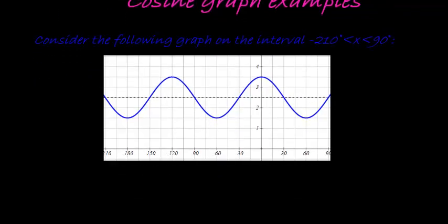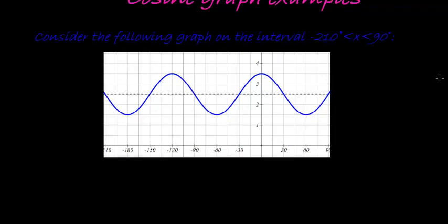Let's go through that again. Where is our center? This graph can have more than one representation. I can, for example, take that as my center and then it's a cosine graph. Or I can take a different center.